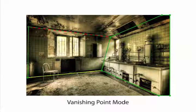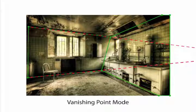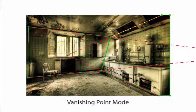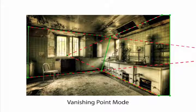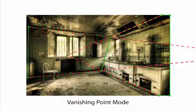We switch to vanishing point mode and add vanishing points for each of the planes by clicking on edges that are parallel in the scene. The program automatically computes their intersection, showing the current locations of the vanishing points.